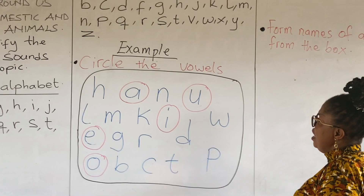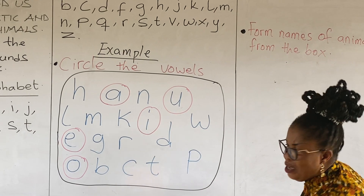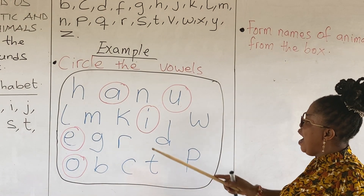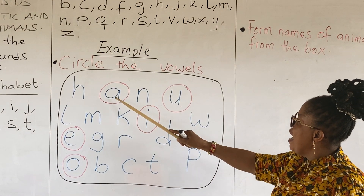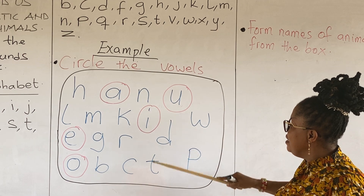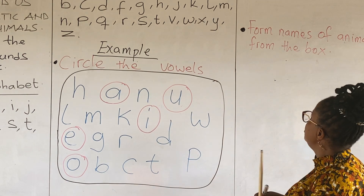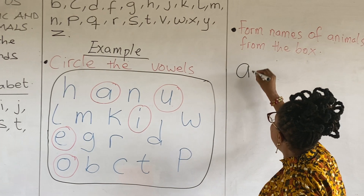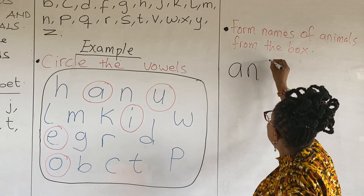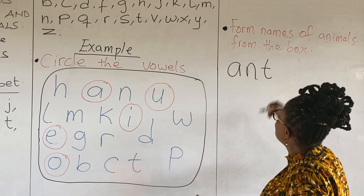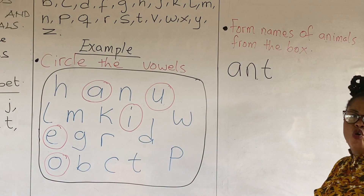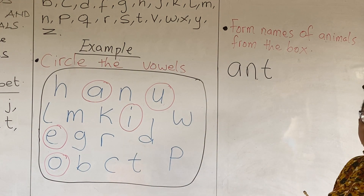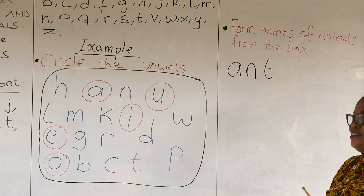Now, let's see whether we can get an ant. Ant is A, N, T. Good. So we have got it: A, N, T. That is one vowel and two consonants put together. We have an ant.